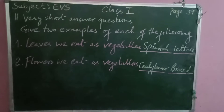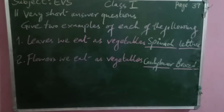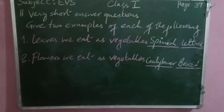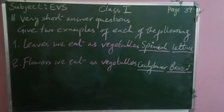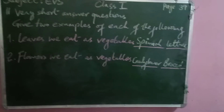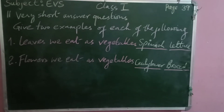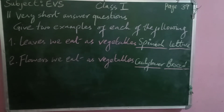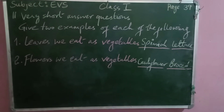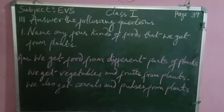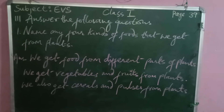Our next question is very short answer type questions. We have to give two examples for each. Question number one: leaves we eat as vegetables — that will be spinach and lettuce. Question number two: flowers we eat as vegetables — that will be cauliflower and broccoli.